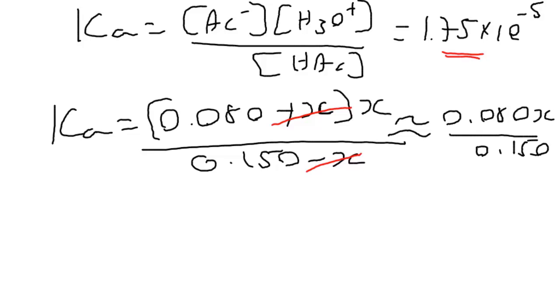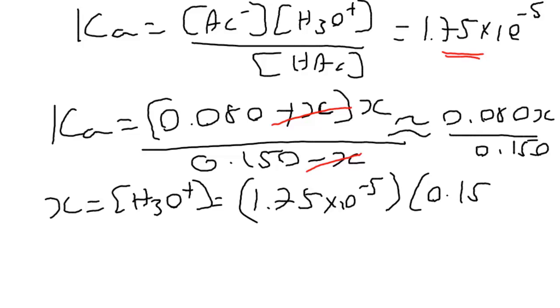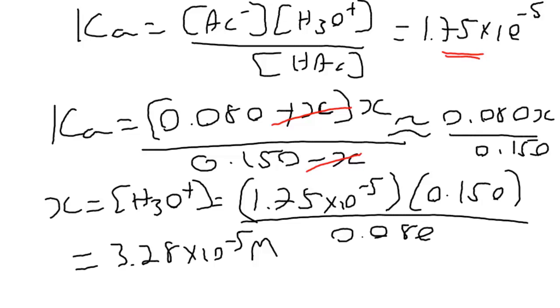So we're going to end up with 0.08x over 0.15, and we know the value for Ka, so we can rearrange for x, which is our H3O+ concentration, and that's going to be 1.75 times 10 to the minus 5 molar times 0.15 divided by 0.08.